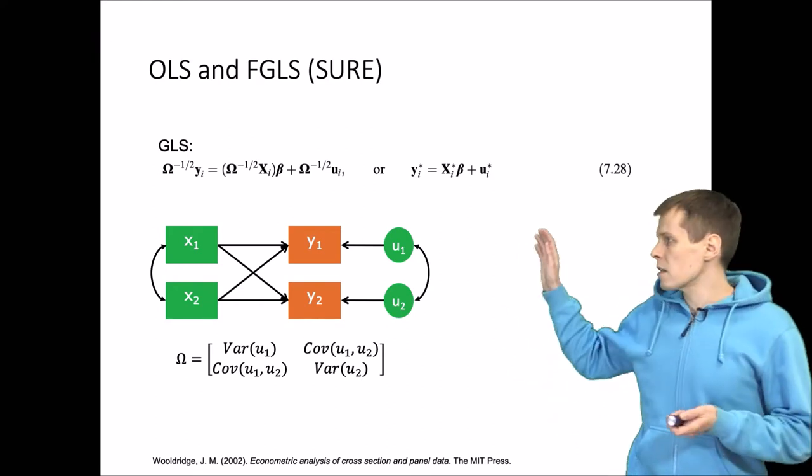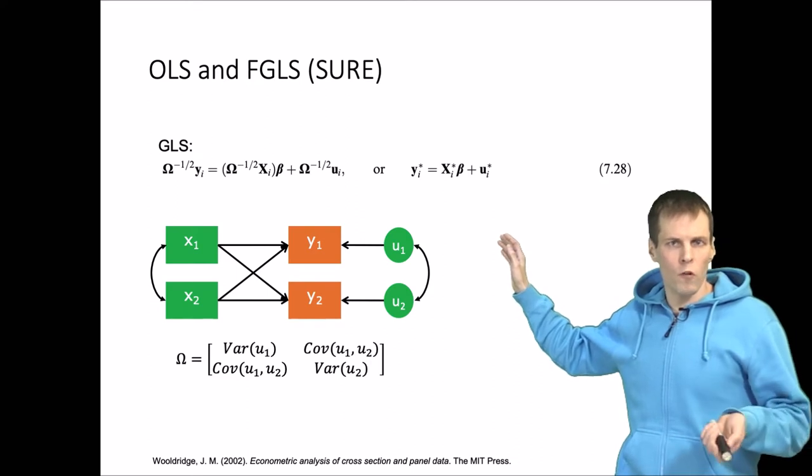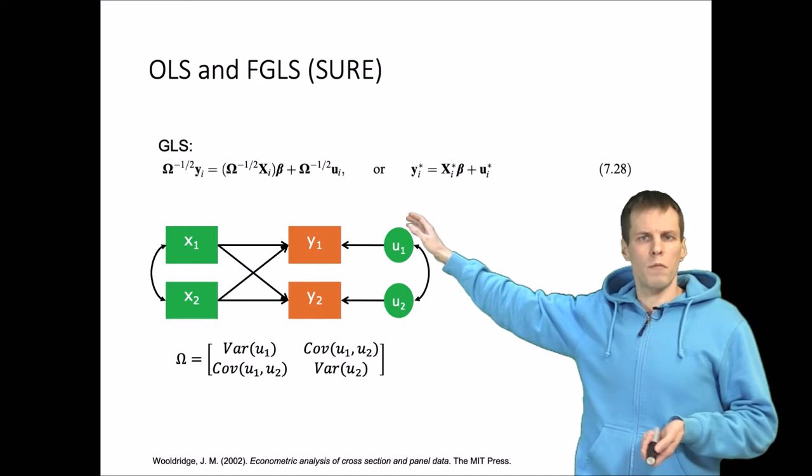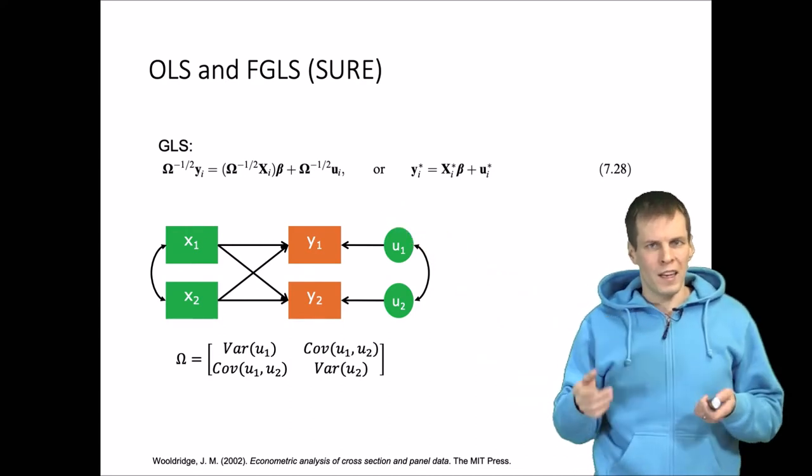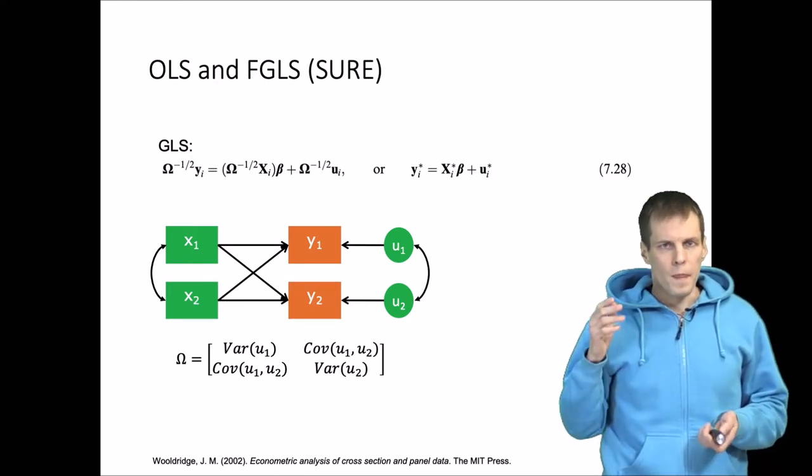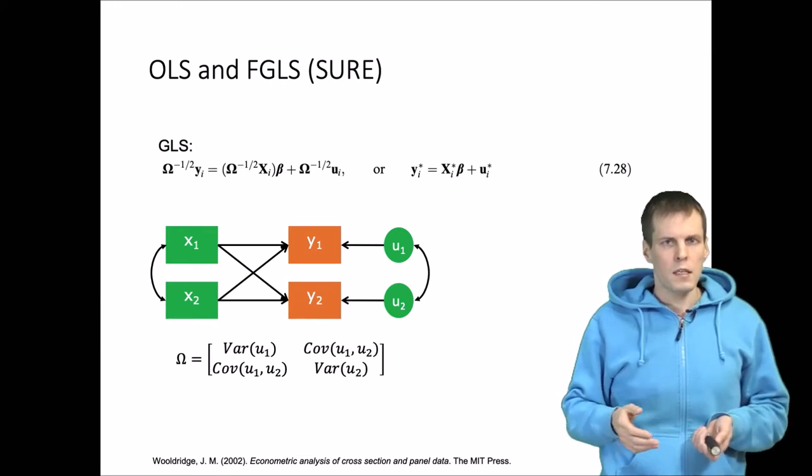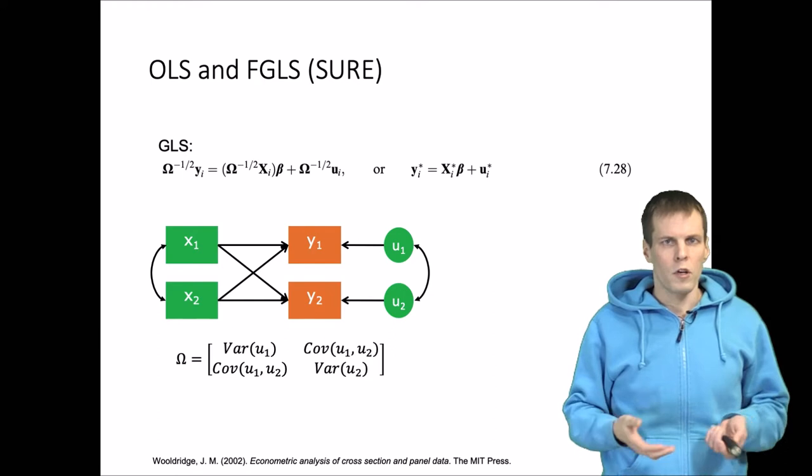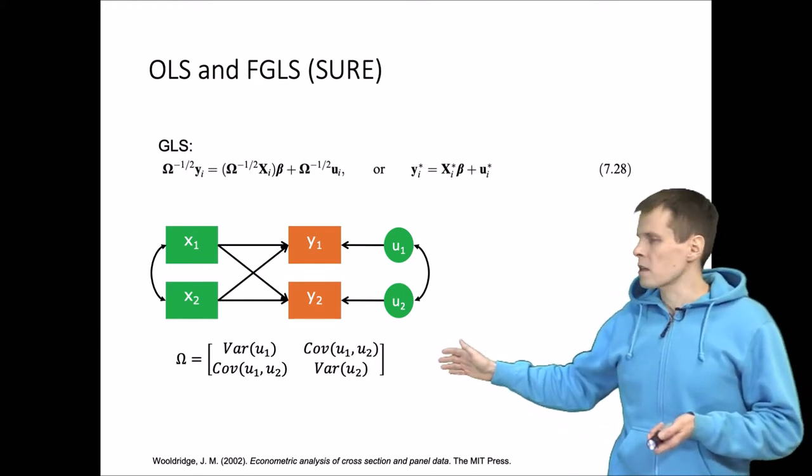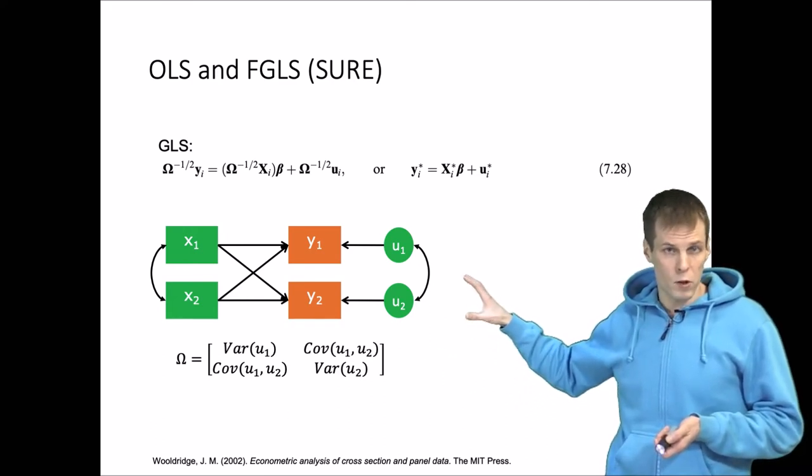The idea in generalized least squares is that we estimate the transformed version of the normal OLS regression analysis. We have a matrix omega that we use to multiply the data, the dependent variable and the independent variables, and then we run OLS regression on those transformed variables. This is more efficient if its assumptions hold than normal OLS regression.